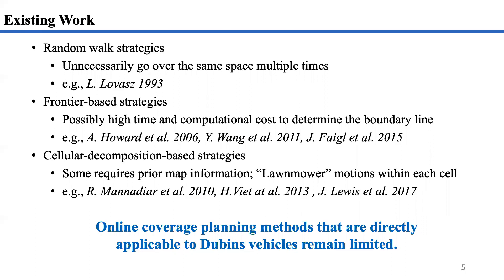Another way is to use a frontier-based approach, where robots proceed according to the boundary line between explored and unexplored space. The time and computational costs to determine the boundary line increase as the map expands. Other planners use some form of cellular decomposition, such as boustrophedon decomposition, to partition the free space into a set of non-overlapping cells. Some of these decomposition methods require a prior map to be known.